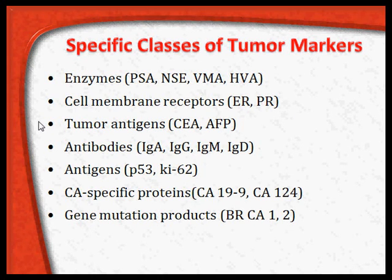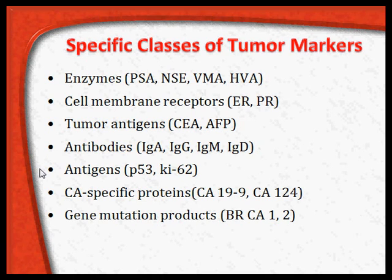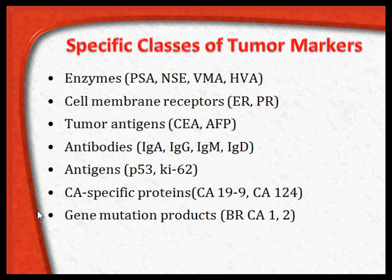Tumor antigens such as CEA and AFP are oncofetal antigens. Tumor antibodies may be detectable in the form of immunoglobulins A, G, M, and D. Tumor antigens like P53 and K-ras can be seen in serum or in the tumor mass. Carcinoma-specific proteins such as CA 19-9 and CA 125 are another class. Gene mutation products in breast cancer include BRCA1 and BRCA2 — inherited gene mutations with familial tendency identified as breast cancer genes.